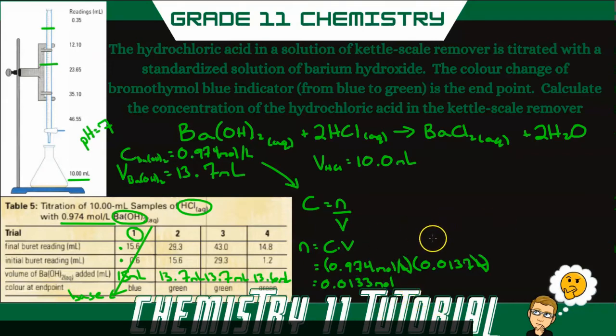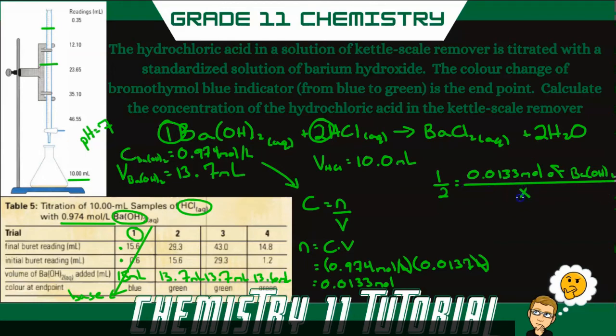So now what we want to do is to do some stoichiometry. So we're comparing our mole ratios between barium hydroxide and hydrochloric acid, which is a 1 to 2 ratio. And that's going to equal the number of barium hydroxide, which is 0.0133 moles of barium hydroxide, divided by the number of moles, let's just call it x, for hydrochloric acid.